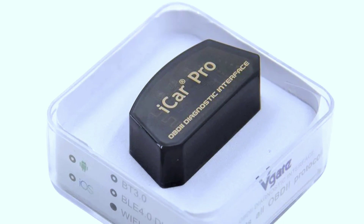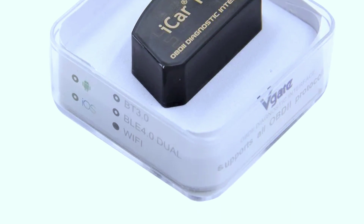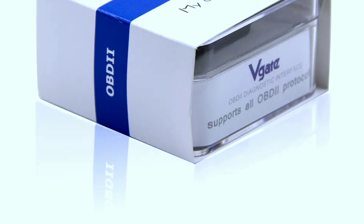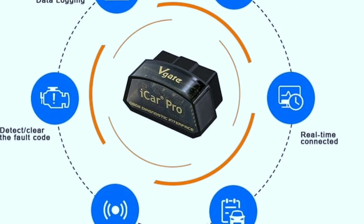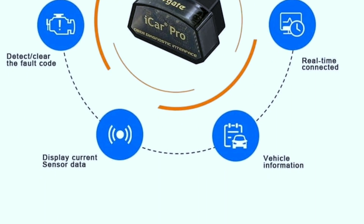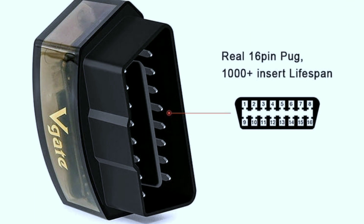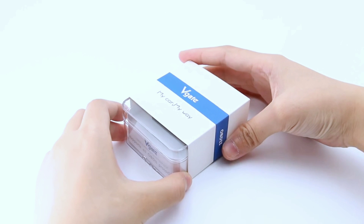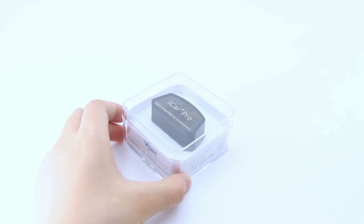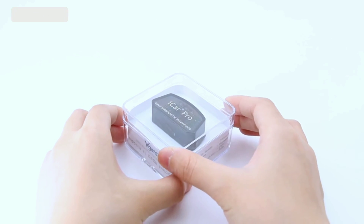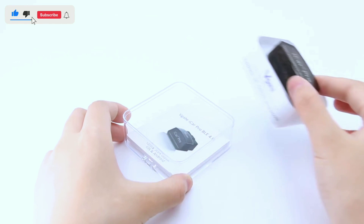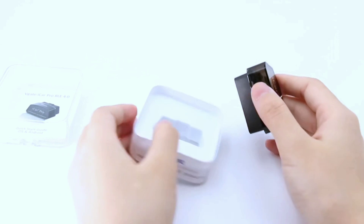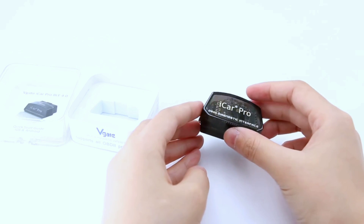The Vagate eCar Pro Bluetooth 4.0 is a powerful, user-friendly tool that can empower you to take control of your car's health and performance. Whether you're a car enthusiast or just want to save on maintenance costs, it's a valuable addition to your toolkit. We hope you found this review helpful. If you have any questions or experiences with the Vagate eCar Pro, please share them in the comments below. And as always, don't forget to like this video, subscribe to our channel, and hit that notification bell for more exciting tech reviews. Thanks for watching, and we'll see you next time.